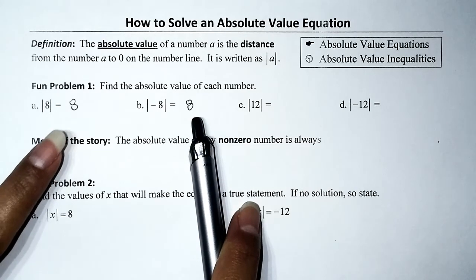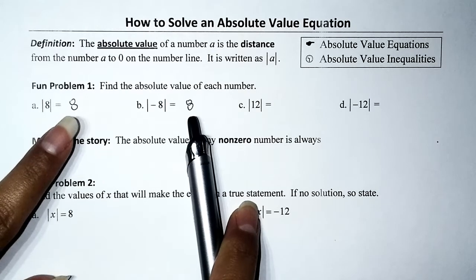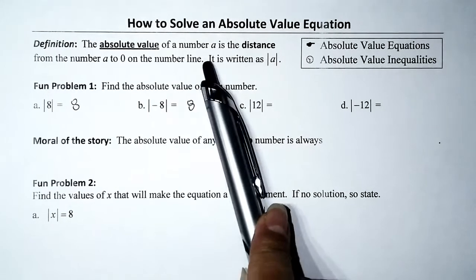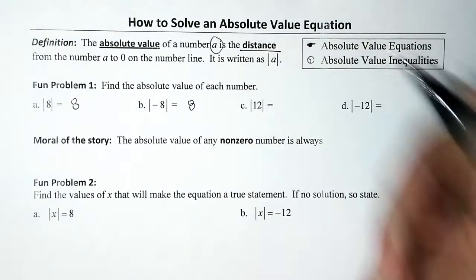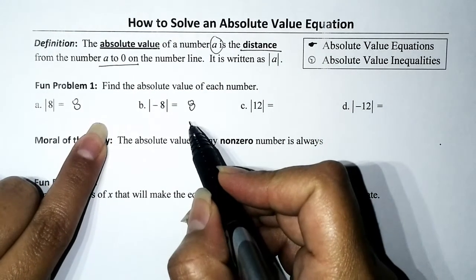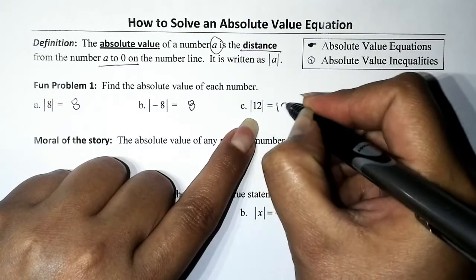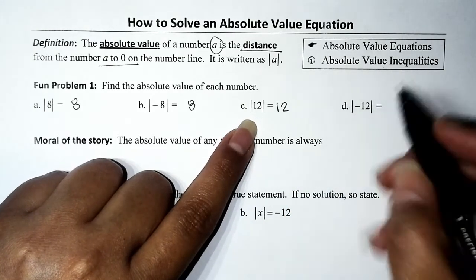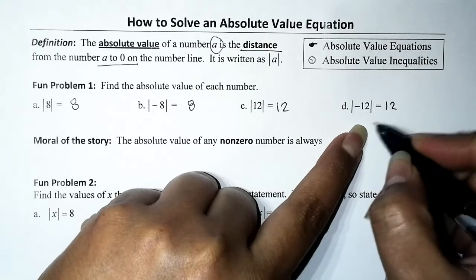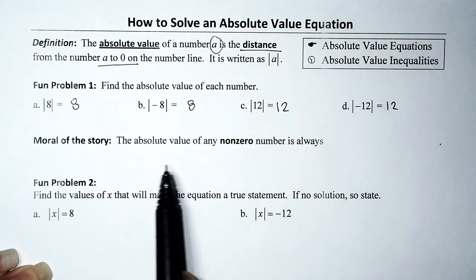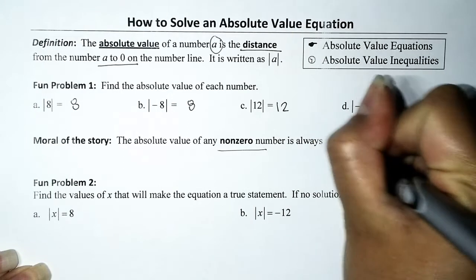But the question is: why is it positive? More specifically, why is it not negative? That's because of the definition of absolute value. The absolute value of some number a is the distance from that number to 0 on the number line. Since distance is non-negative, this is why we're never going to have a negative result. Absolute value of 12 is 12 because 12 is 12 units away from 0. Absolute value of negative 12 is also 12 because negative 12 is 12 units away from 0. The moral of the story is: the absolute value of any non-zero number is always positive.